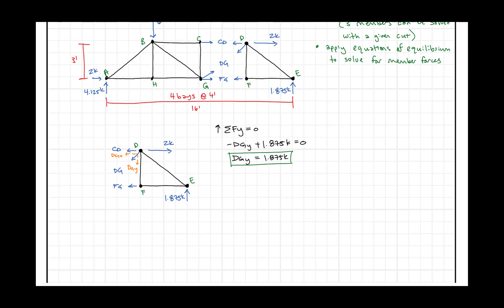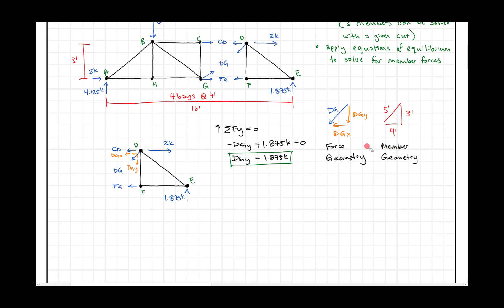The next thing is to relate that force to something else. DG acts in the same direction as the member geometry, so we can put in the components DGY and DGX. The member geometry gives us a height of three feet and a width of four feet for member DG — our beloved 3-4-5 triangle. On one side we have the force geometry, on the other the member geometry. These are similar triangles, so tangent of the angle equals DGY over DGX on one side, and three over four on the other.